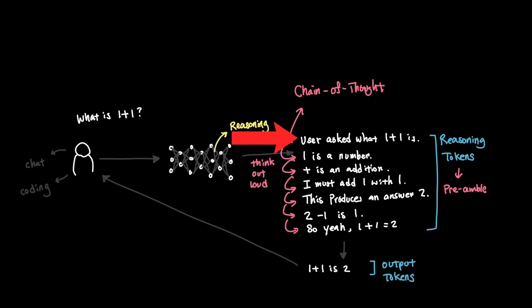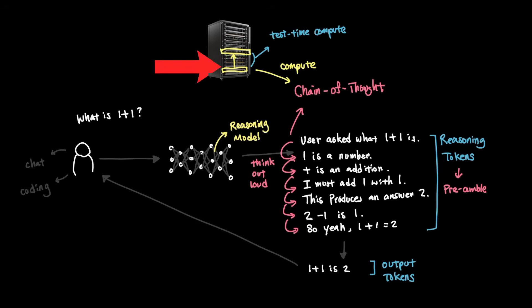As you can imagine, producing a large amount of chain of thought could require a lot of compute because you need to dedicate more hardware to essentially think harder depending on the complexity that the user requests. And this kind of computation is called test time compute, which refers to the amount of compute that's designated for reasoning.